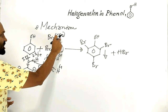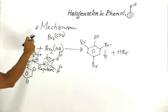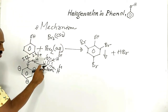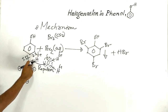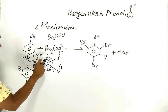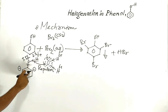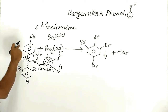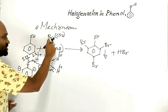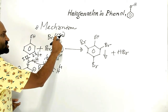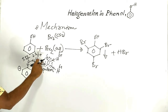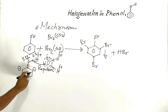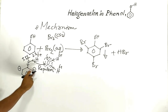Carbon disulfide cannot affect the hydroxyl group in phenol, but water affects the hydroxyl group. As a result, the hydroxyl group increases electron density at ortho and para positions, which is higher than when bromine solution in carbon disulfide is used. This is the main role of water — it increases electron density in the benzene ring at ortho and para positions.